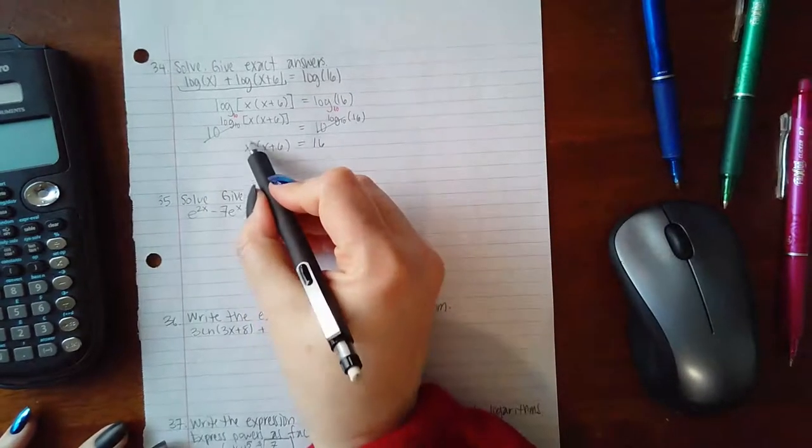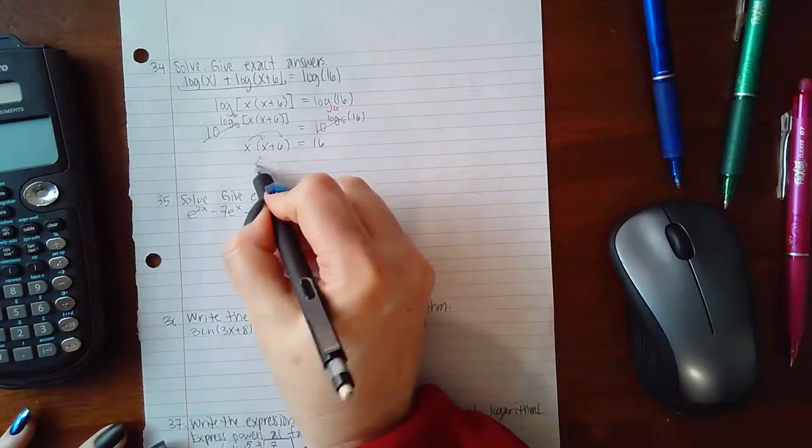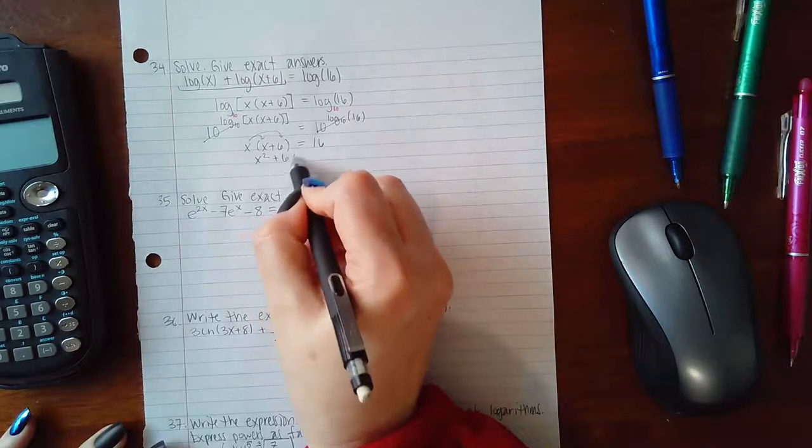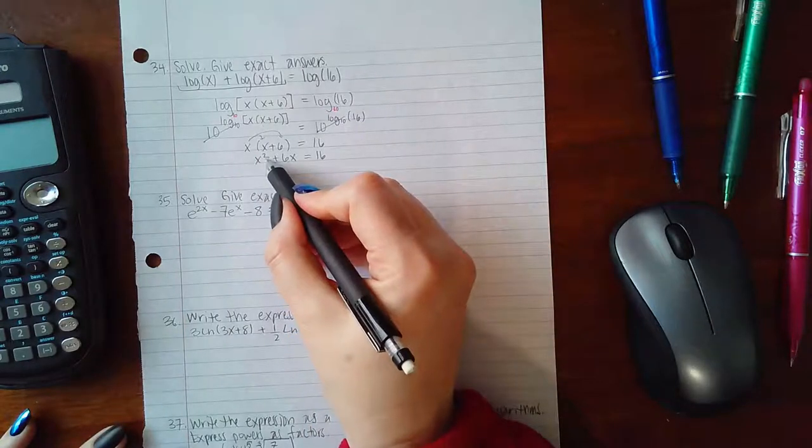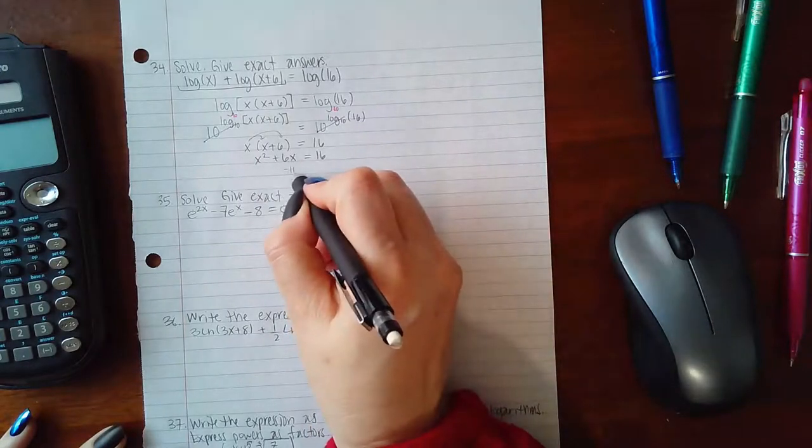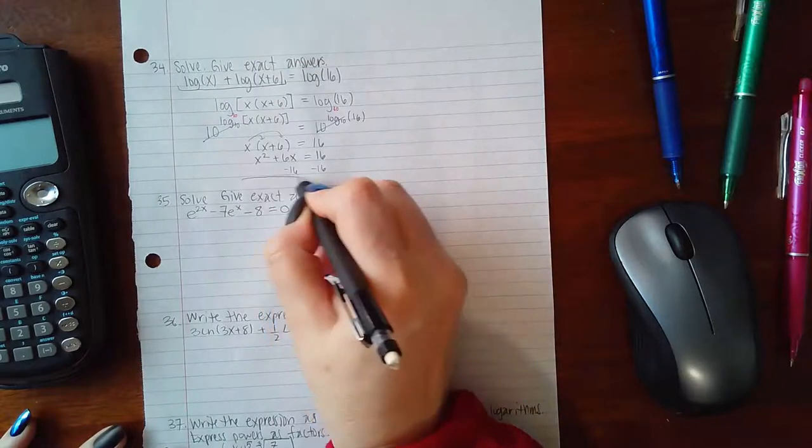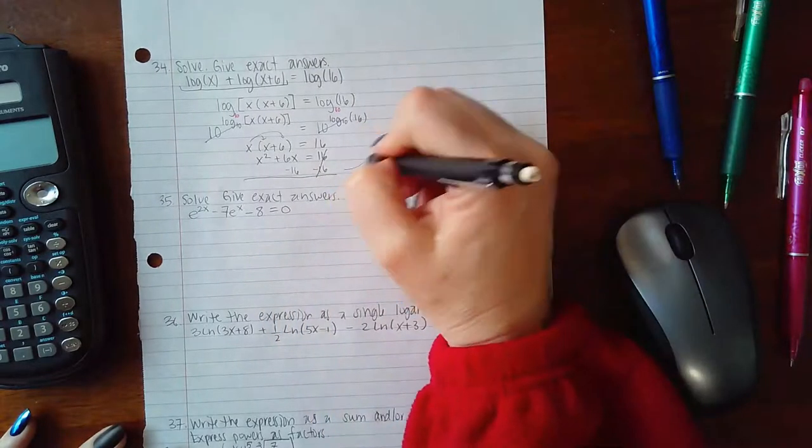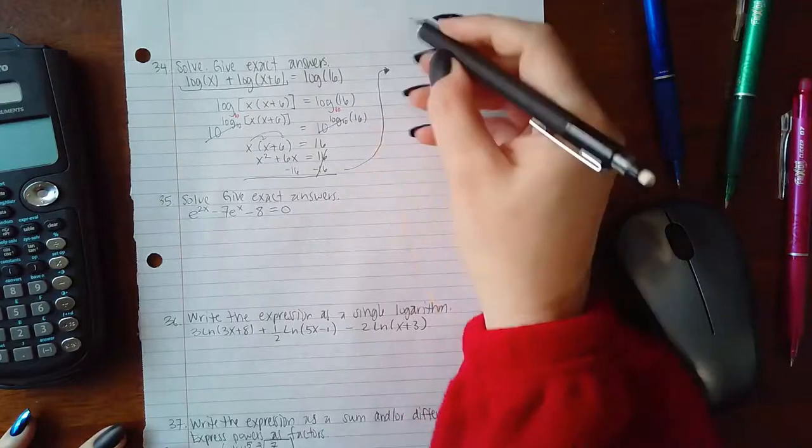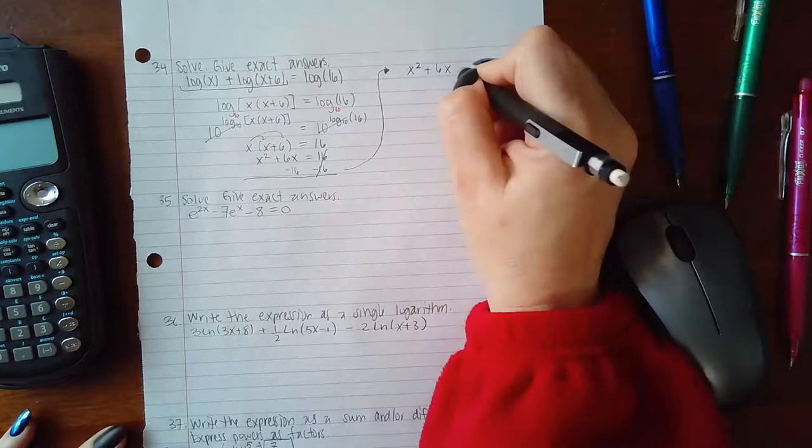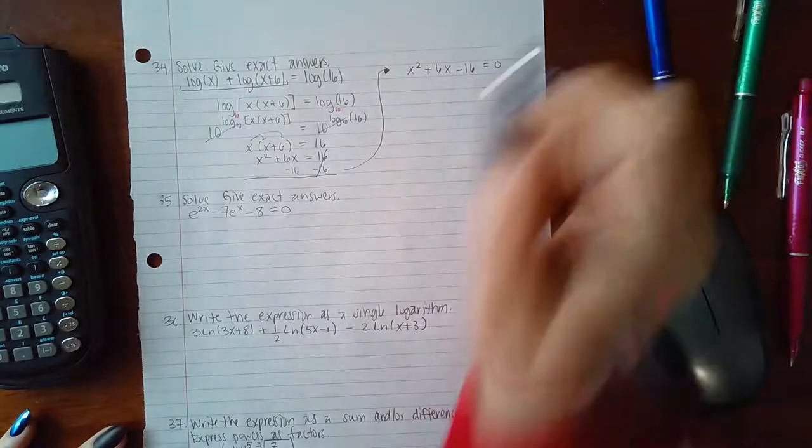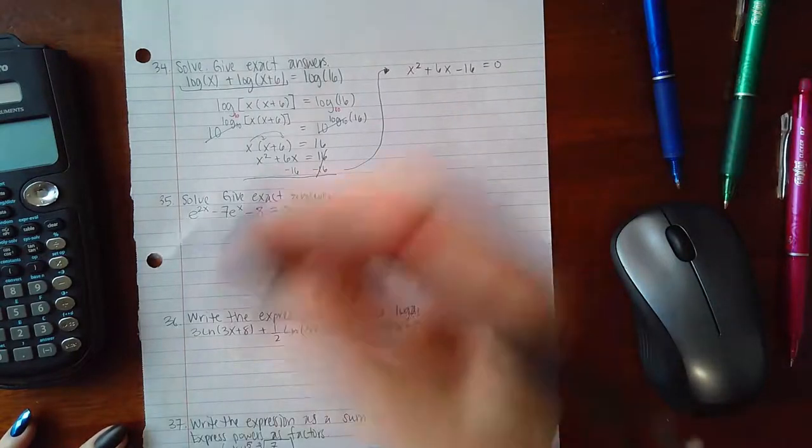If I distribute my x, I end up with x squared plus 6x equals 16. This is a quadratic equation, so I need to get it equal to zero. The equation becomes x squared plus 6x minus 16 equals zero, and I can factor that.